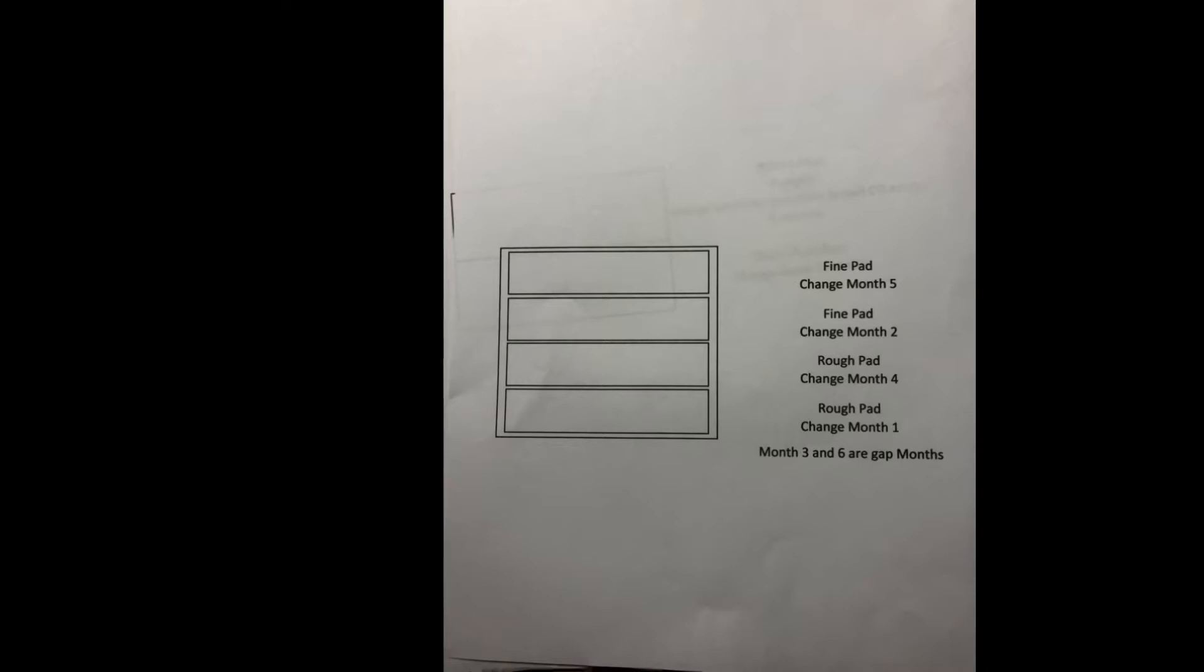Month five, you change out a fine pad. Month six is a gap. That way you continue to build that bacteria. And you always have good, sustainable bacteria in your filter. You don't want to pull it all at one time. You don't want to crash your system.